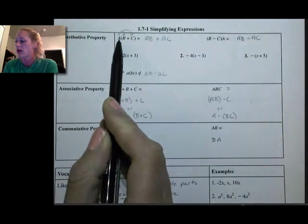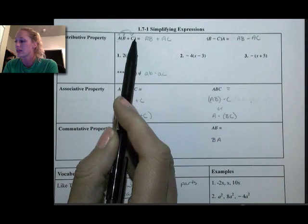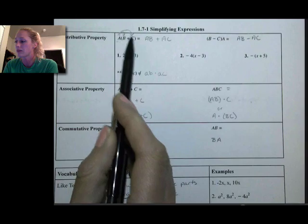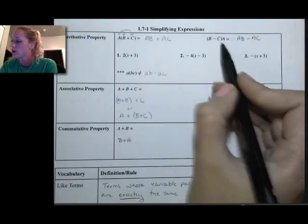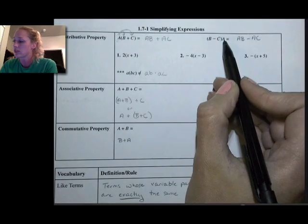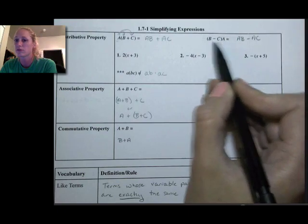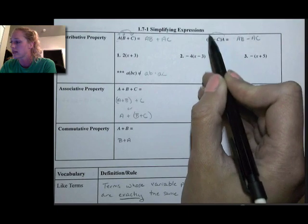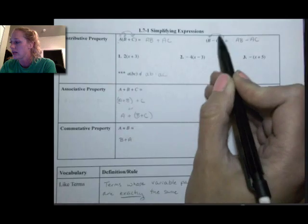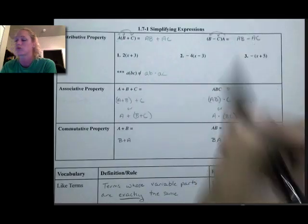So a times b, and then a times c, and then keep that sign in the middle. It also works this way: if I have something behind, it's still being multiplied when it's smashed together like that, so I can still do a times b and a times c, and then keep that subtraction.